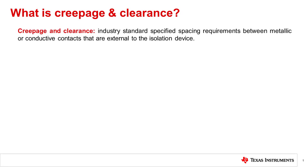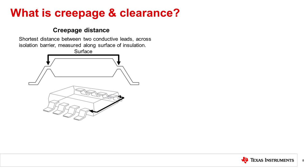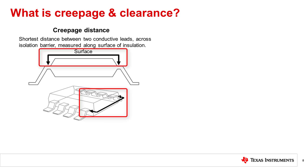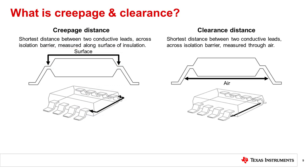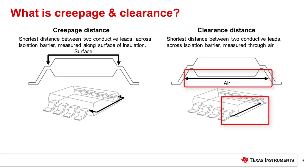Creepage and clearance requirements are industry-standard specified spacing requirements between metallic or conductive contacts that are external to the isolation device. Creepage is defined as the shortest distance between two conductive paths measured along the surface of a solid insulation — the shortest path is typically found around the end of the package body, between conductive pins or leads. Clearance is the shortest distance between two conductive parts measured through air, typically measured on a device package between pins under the body of the package.